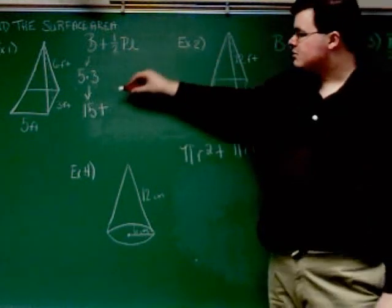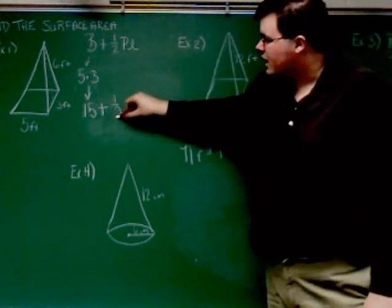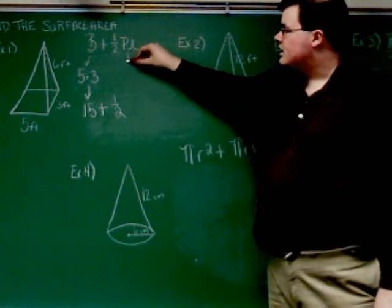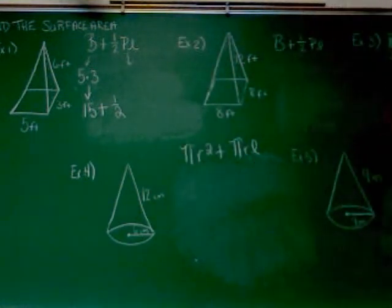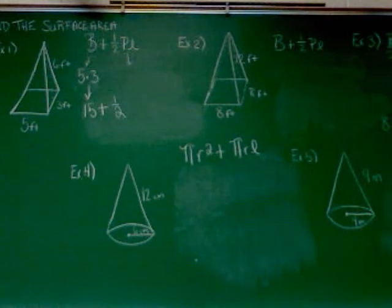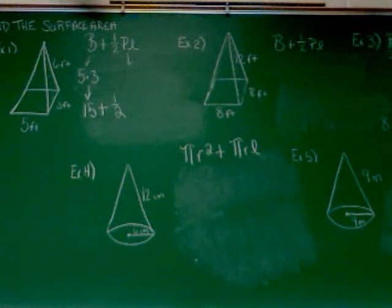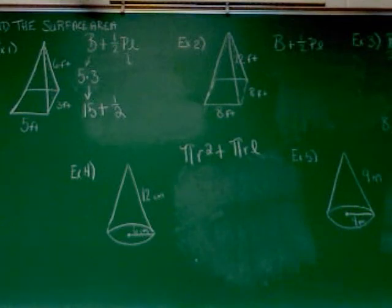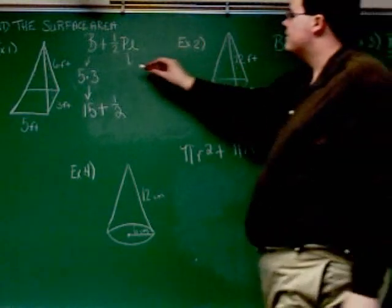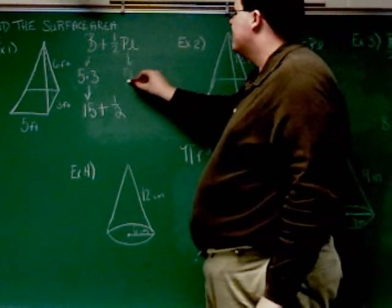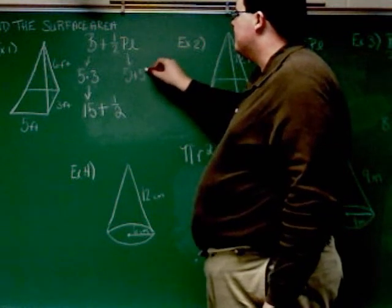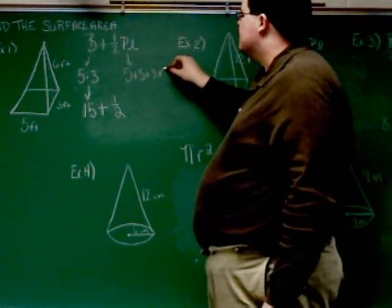The next part says plus one-half — that doesn't change. The next thing is P, the perimeter of the base. The perimeter is when you add up all the sides: this side is five, so the opposite side is also five; this side is three, so the opposite side is also three. So we've got five, five, three, and three to add up, which gives me 16.